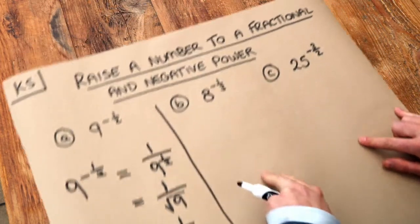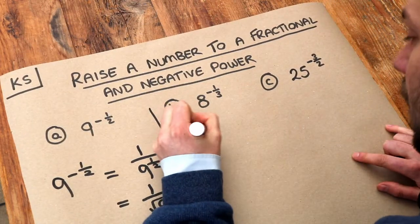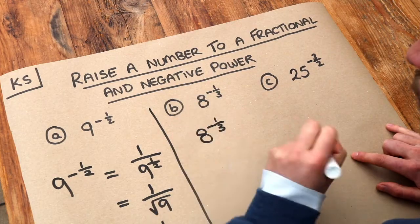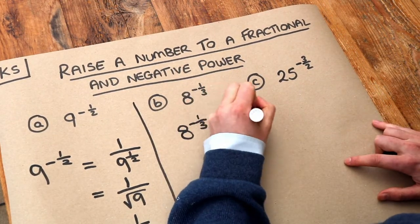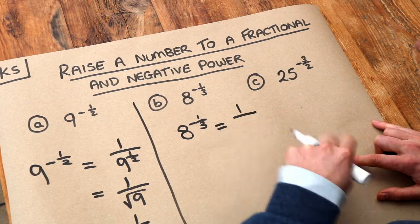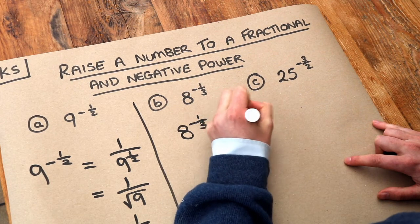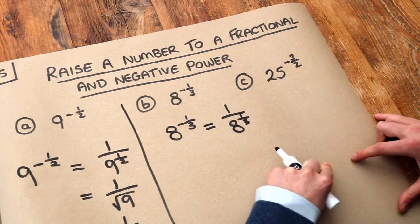What about the second one? We've got 8 to the power of minus a third. I'm going to deal with the negative part of the power first. So we do 1 over it. So we'd write 8 to the third without the minus. The minus is now gone.